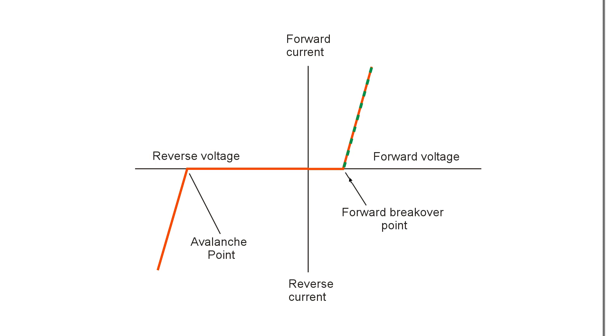But that is the meaning of the term forward break over point. It's that voltage at which, with forward bias, a diode will begin to conduct.